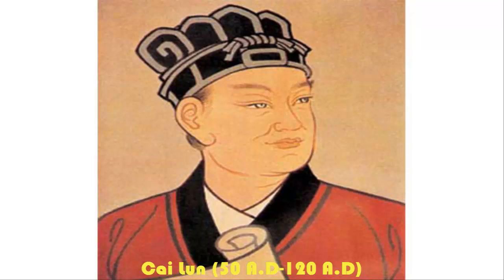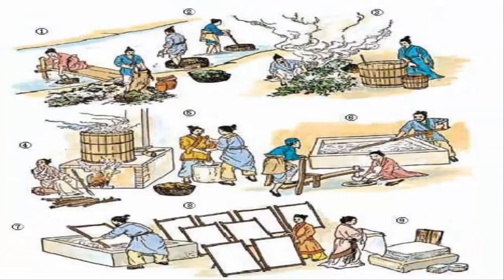Kai Loon is traditionally regarded as the inventor of paper and paper-making processes in forms recognizable in modern times. Although early forms of paper had existed in China since the 2nd century BC, he was responsible for the first significant improvement and standardization of paper making by adding essential new materials into its composition. He lived between 50 AD to 121 AD.